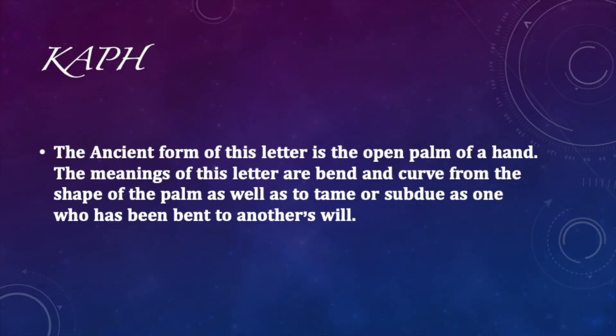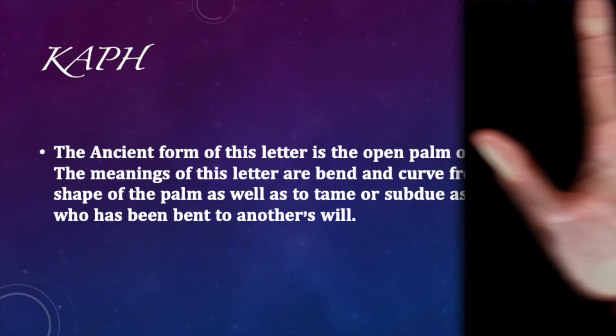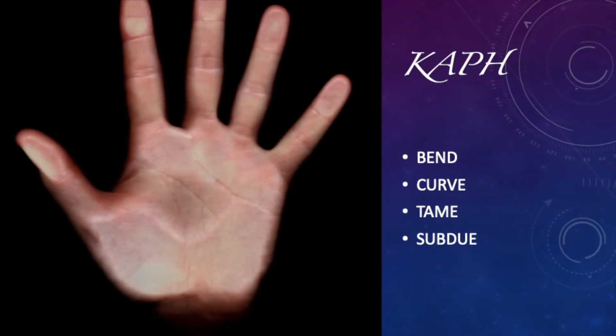Let me introduce you to the next letter: the Kaf. The Kaf has to do with the palm of the hand. It means to curve or to bend, as well as to tame or to subdue. YAH is using this language to show us why he's using it — because he's trying to subdue our will and our mind. The only way he does that is through his hand, like a shepherd with his staff, leading his sheep in the direction he wants them to go.